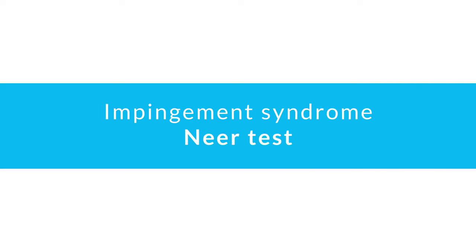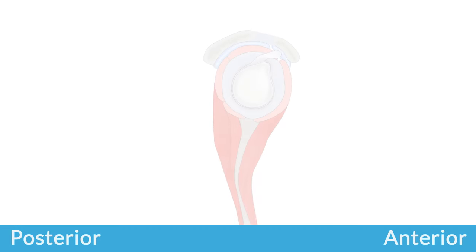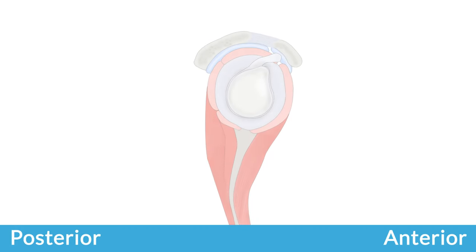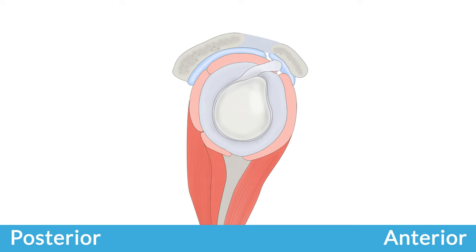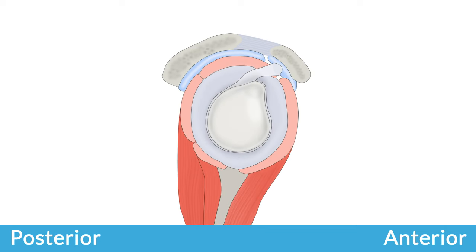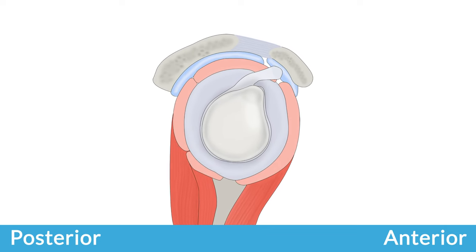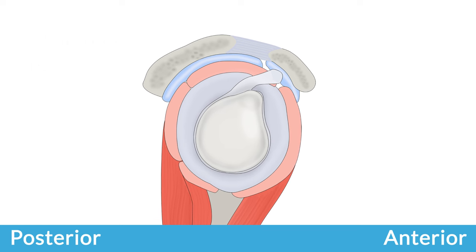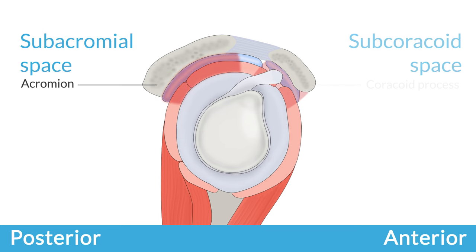Impingement Syndrome is one of the most common pathological conditions of the shoulder. It is caused by a narrowed subacromial or, in rare cases, subcoracoid space, which leads to impingement of tendons or connective tissue.